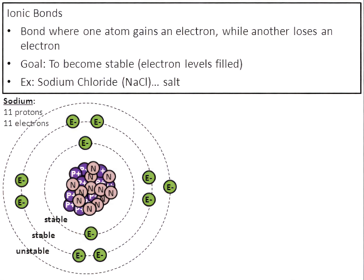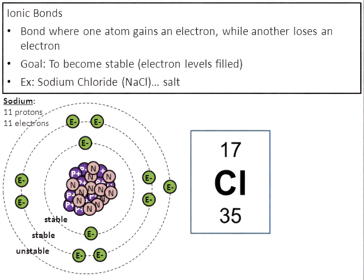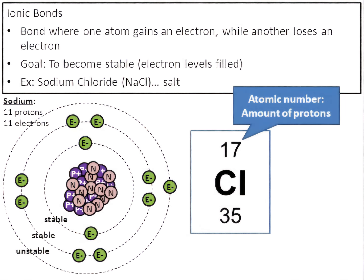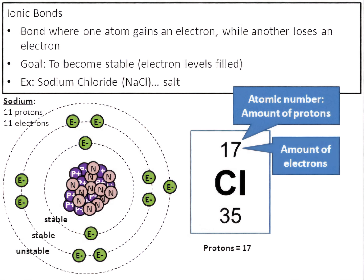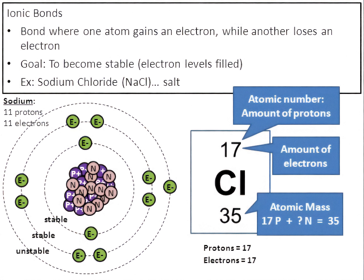Sodium has 11 protons and 11 electrons, and 12 neutrons. Because neutrons have no charge, we don't need to focus on them. Now let's shift focus to chlorine. From the periodic table, the atomic number 17 means 17 protons. Since proton number is the same as electron count, chlorine has 17 electrons. The mass is 35, so 17 protons plus 18 neutrons equals 35 — chlorine has 18 neutrons.